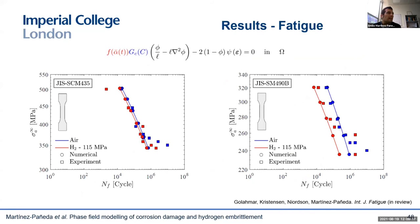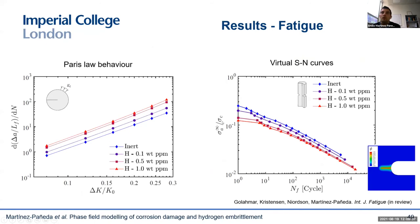We have also extended the framework to fatigue. We just add a fatigue degradation function and can deliver predictions based on the material toughness and nominal material properties. We can produce virtual S-N curves with and without hydrogen, reaching very good agreement with experiments, and predict the influence of hydrogen on Paris Law coefficients. The Paris Law behavior and S-N curves are an output of the calculation, not an input — just an energy-based approach based on the thermodynamics of fracture and a mechanistic hydrogen degradation law.